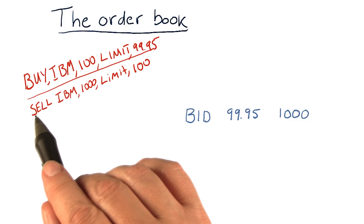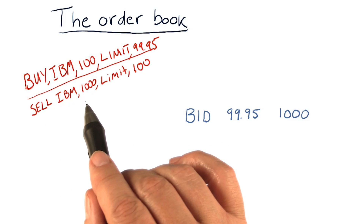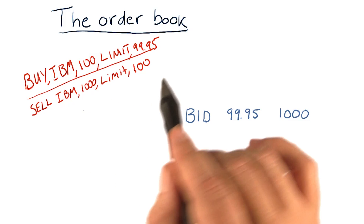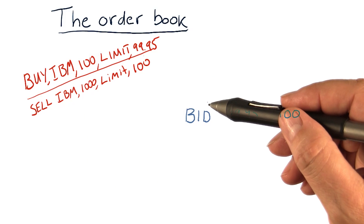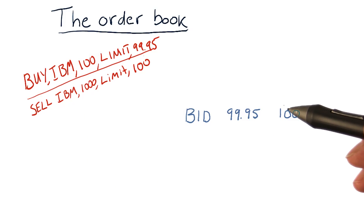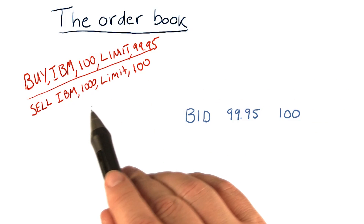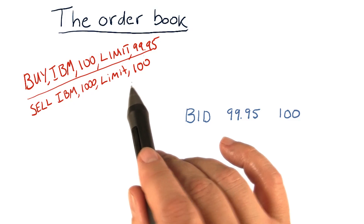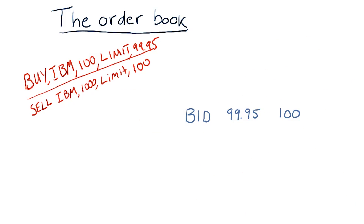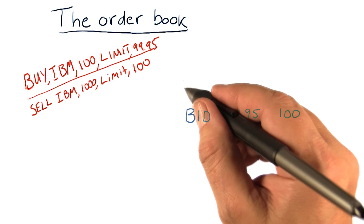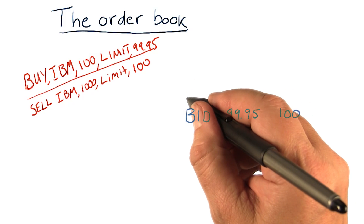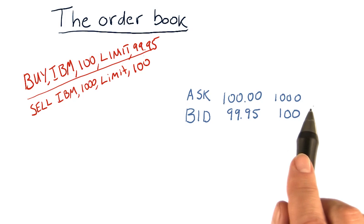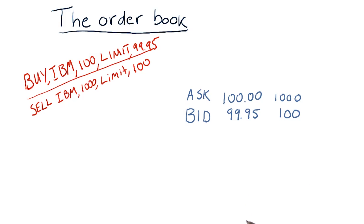Let's suppose a sell order comes in: sell IBM, 1,000 shares, limit of $100. There's nobody willing to buy 1,000 shares at $100, so the exchange is going to have to add this order to its order book. This will be our first ask. We've got now our first ask as part of our order book.